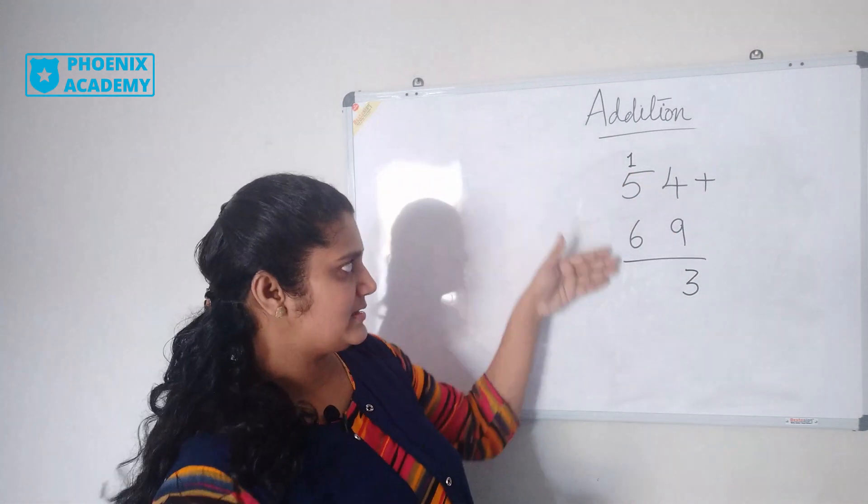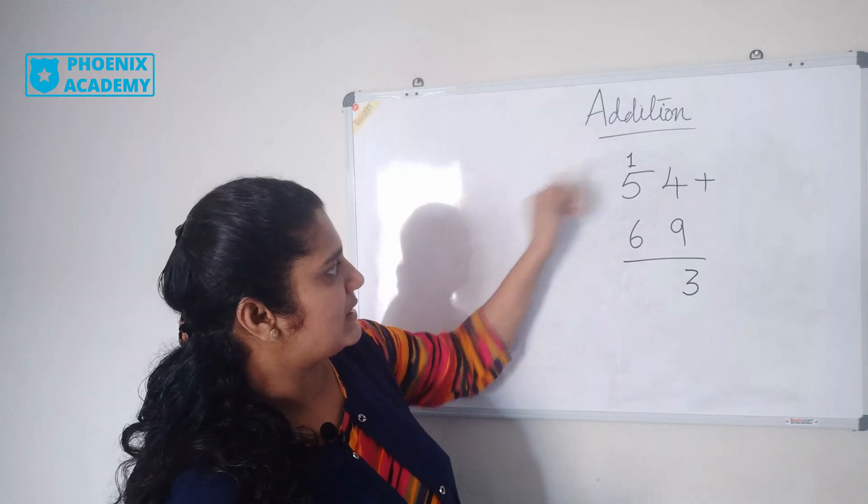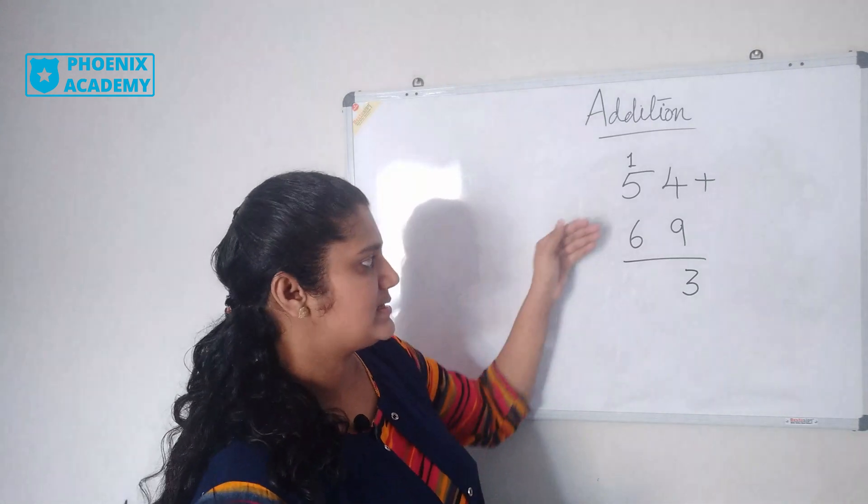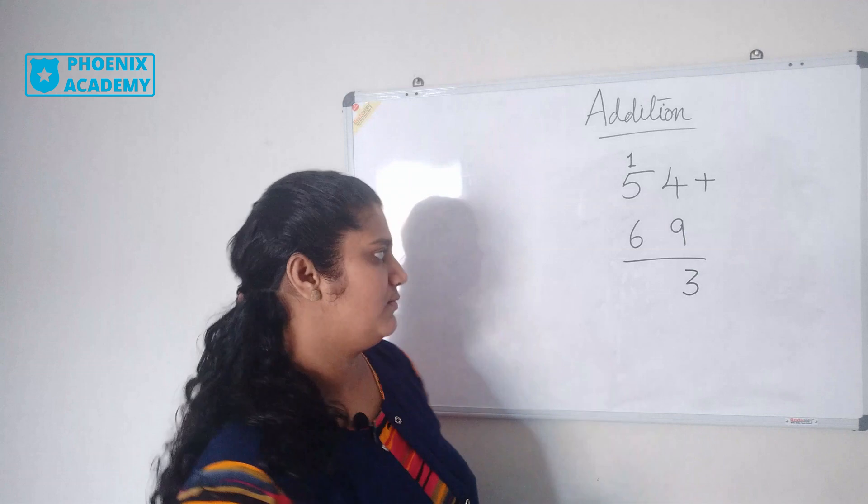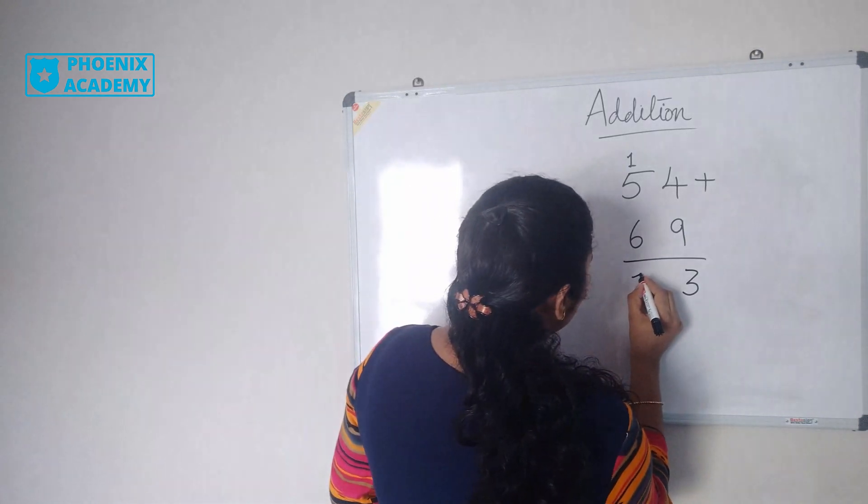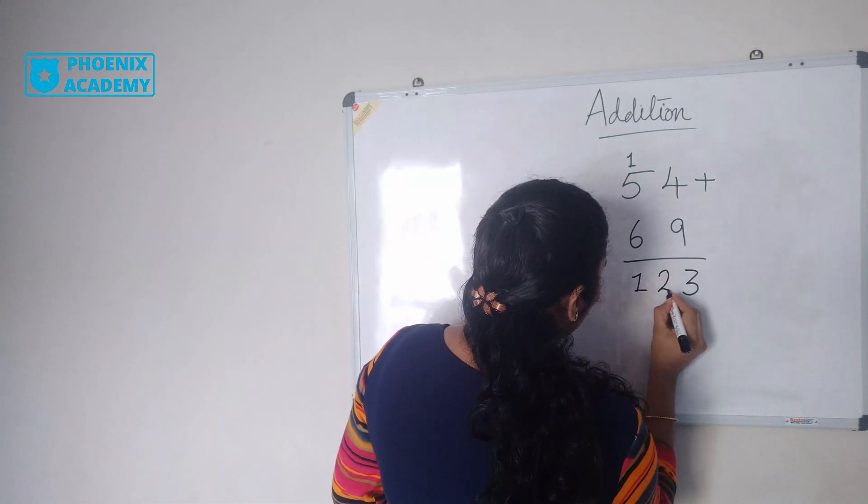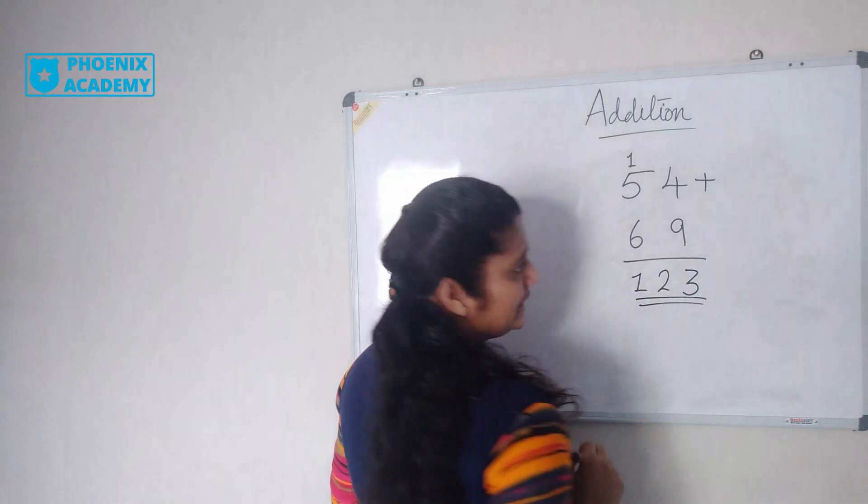Now let's add the tens: 1 plus 5 is 6, then 6 plus 6 is 12. So the answer is 123.